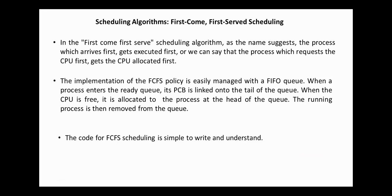In the first-come-first-served scheduling algorithm, the process which arrives first gets executed first, or we can say the process which requests the CPU first gets the CPU allocated first. The implementation of the first-come-first-served policy is easily managed with a first-in-first-out queue. When a process enters the ready queue, its process control block is linked into the tail of the queue. When the CPU is free, it is allocated to the process at the head of the queue, and the running process is then removed from the queue. First-come-first-served scheduling is a non-preemptive scheduling algorithm. Once the CPU has been allocated to a process, that process keeps the CPU until it releases it, either by terminating or by requesting an I/O operation.